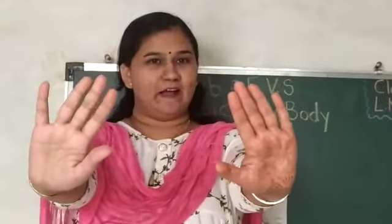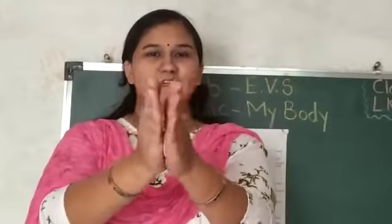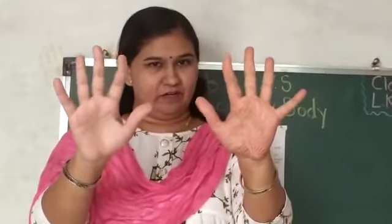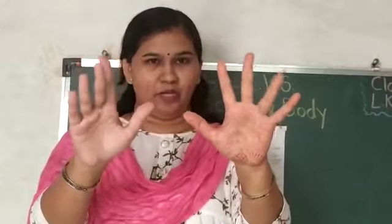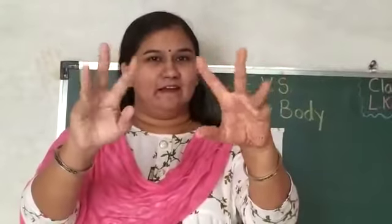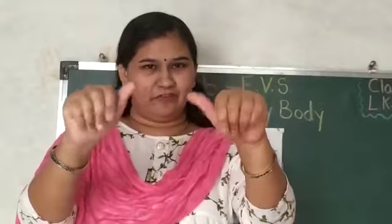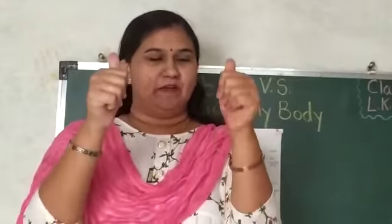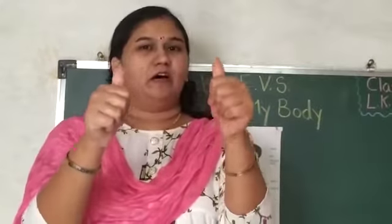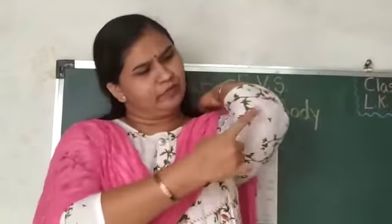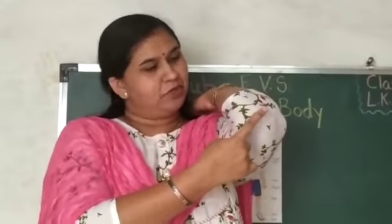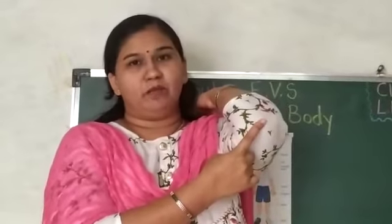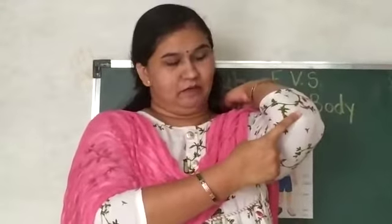These are my hands — clap your hands. Fingers. Show me your fingers, everyone. Wriggle your fingers. Show me your thumb. These are thumbs. Very good. What is this? Do you know this? Elbow — this is elbow. Point at your elbow like I am doing. Elbow.